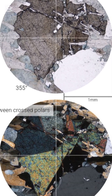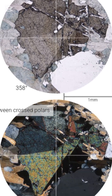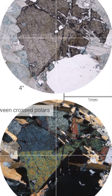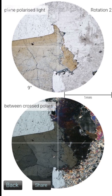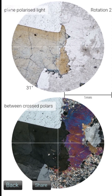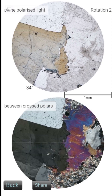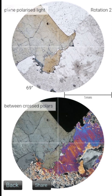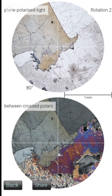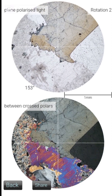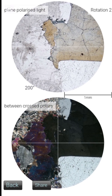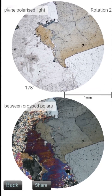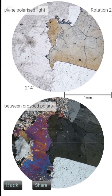The vein also contains tin oxide, which is cassiterite, distinguished by its higher relief and dark brown color. Although unlike many minerals, it is not opaque.